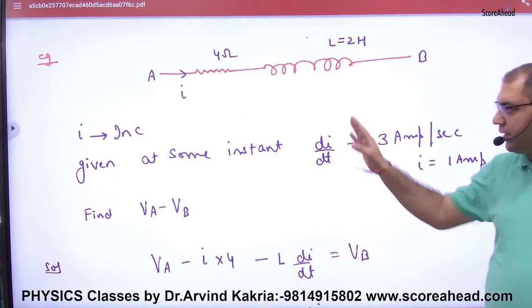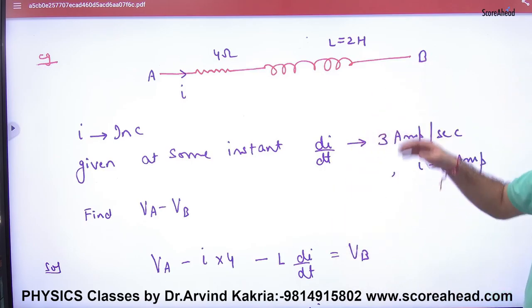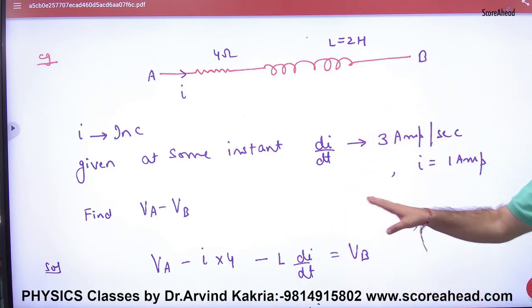If current is increasing, di/dt is 3 ampere per second, so 3 ampere current is increasing in 1 second. In any instant, current value is 1 ampere. You have to find potential difference between A and B.